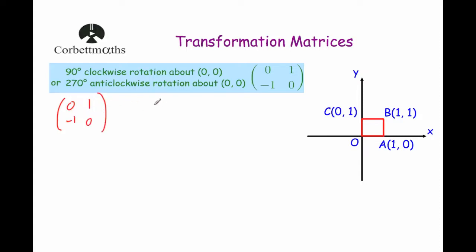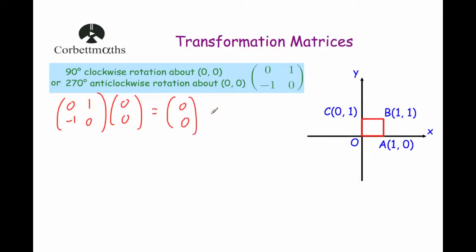And we're going to multiply it by the point that first of all is at the origin, the point 0, 0. Now because the centre of rotation is the origin, this point should stay where it is. So 0 times 0 is 0, and 1 times 0 is 0, adding them together is 0, so the x-coordinate will be 0. And then minus 1 times 0 is 0, 0 times 0 is 0, so that's the point 0, 0. So the point at the origin will stay there.